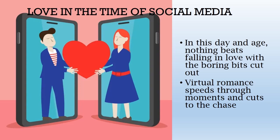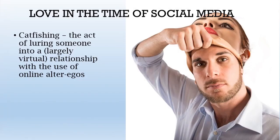Social media presents both benefits and challenges since it has transformed the way individuals meet, engage, and sustain relationships. It offers a way to meet people and keep up long-distance relationships, but it also brings complications like digital envy, the need to project an idealized image of oneself, and the possibility of misunderstandings. Social media dynamics have the power to both intensify and complicate love in the digital era. Catfishing is an activity wherein an individual fabricates an online identity, frequently with fictitious names, images, and content, in order to deceive and manipulate people on the internet. This term first appeared in the 2010 documentary Catfish, in which a man found out he was dating an internet person who had assumed a phony identity.